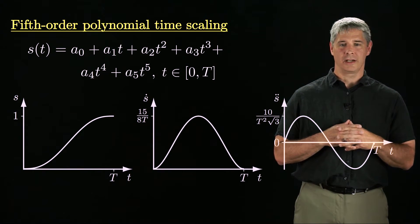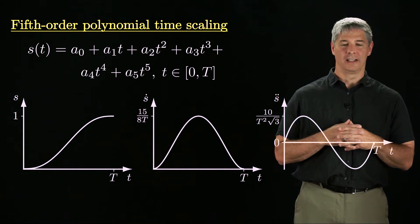Now s double-dot is a cubic, allowing s double-dot to be zero at the beginning and end of the motion.